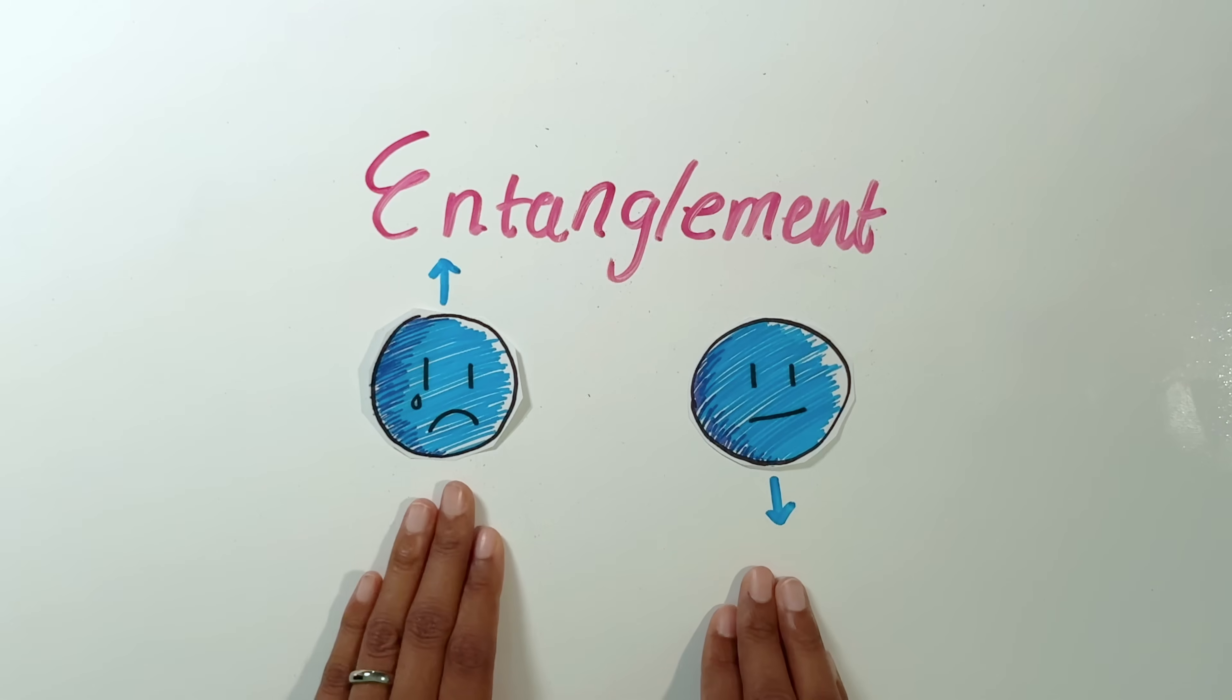Now can you tell me the state of either of these coins? Well, this coin, you could say, is heads as long as this one is tails, and it's tails as long as this one is heads. Does this count as entanglement? Well, actually, no. This is just uncertainty.